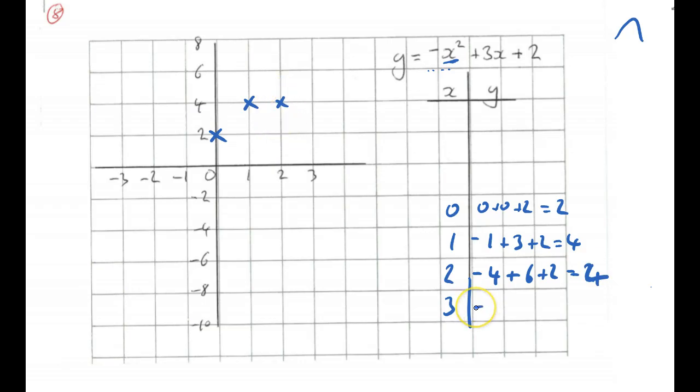For x equals 3, negative 3 squared is 9, plus 3 times 3 is 9, plus 2, that equals 2. That's my symmetry bit going there, that's great.